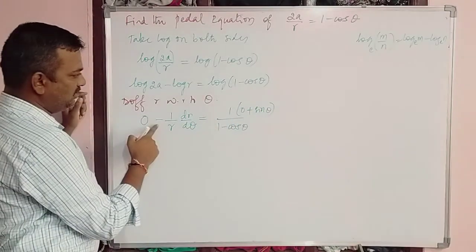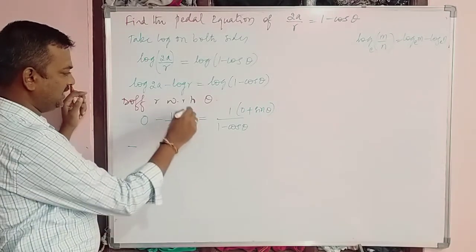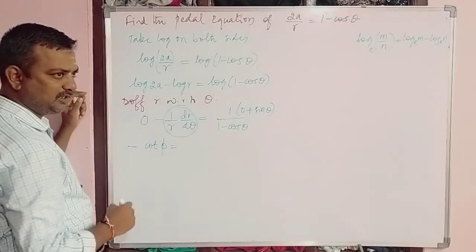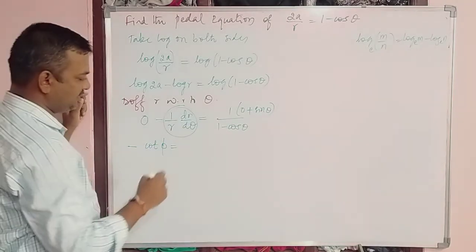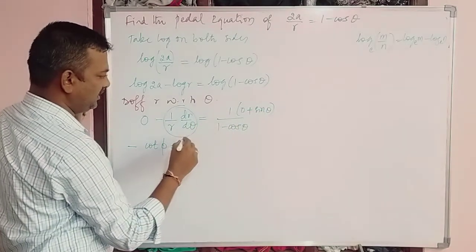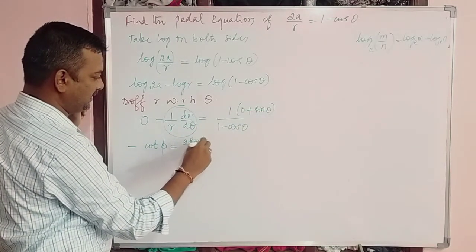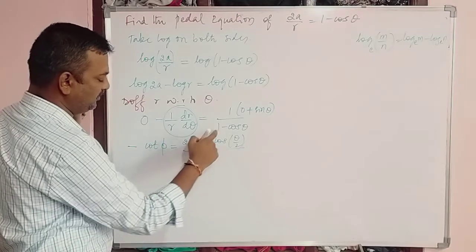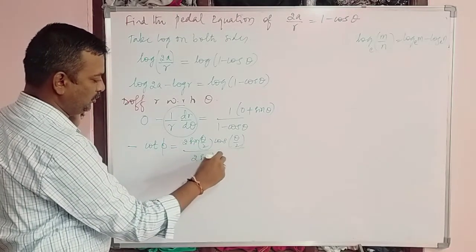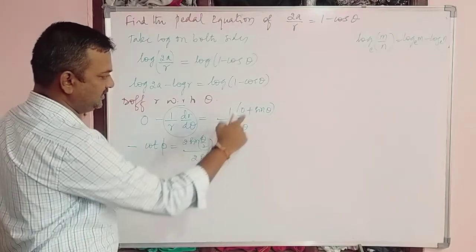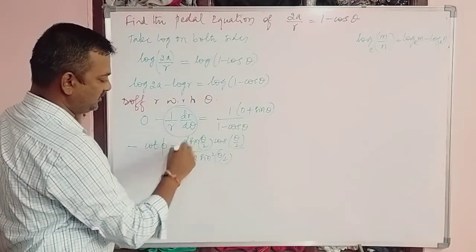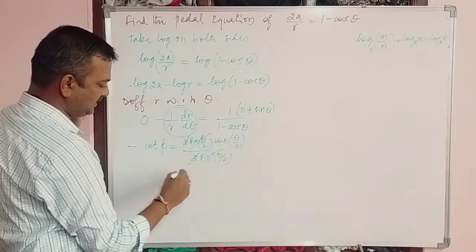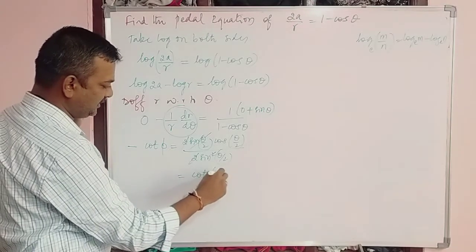So we have −(1/r)·dr/dθ = −sin θ/(1 − cos θ). We know (1/r)·dr/dθ = cot φ. Apply the half-angle formulas: sin θ = 2·sin(θ/2)·cos(θ/2) and 1 − cos θ = 2·sin²(θ/2). This simplifies to cos(θ/2)/sin(θ/2), which is cot(θ/2).